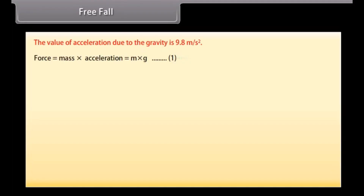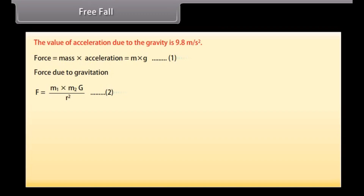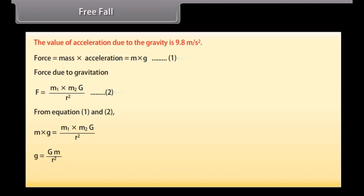Derivation of acceleration due to gravity. Force equals mass times acceleration: F = m × g — equation 1. Force due to gravitation: F = (M1 × M2 × G) / R² — equation 2. From equations 1 and 2: m × g = (M1 × M2 × G) / R², which gives g = G × M / R². Therefore g = 9.8 m/s².